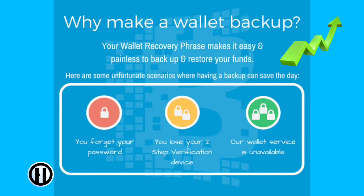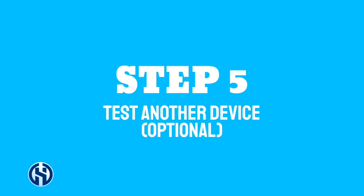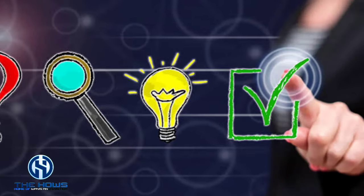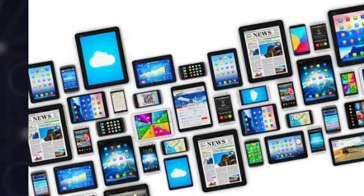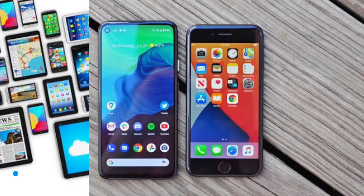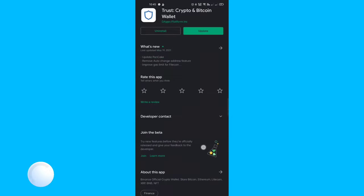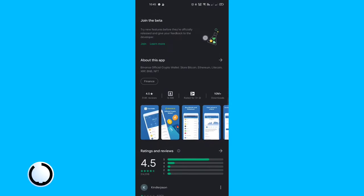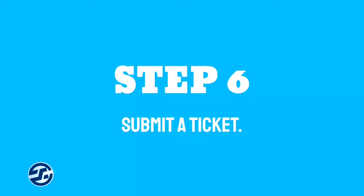Step five: test another device. To better isolate the issue, using another device is another way of doing so. If you have a spare phone or tablet, install the app and test.